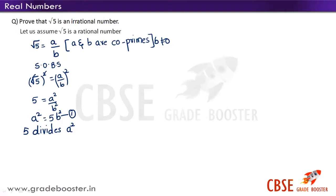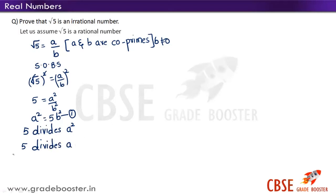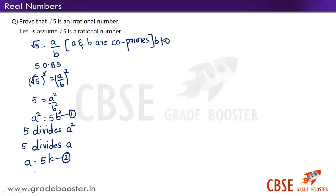So 5 divides a square. We can write it from equation 1. If 5 divides a square, then 5 also divides a. So we write: 5 divides a. Therefore a is equal to 5k, where k is the multiple of 5. This is equation 2.